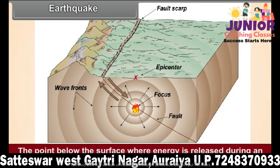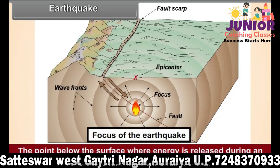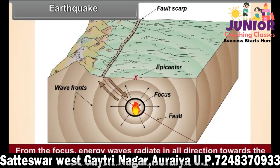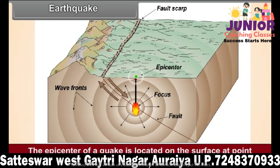The point below the surface where energy is released during an earthquake is called the focus of the earthquake. From the focus, energy waves radiate in all directions towards the surface. The epicenter of a quake is located on the surface at the point nearest to the focus.